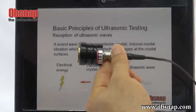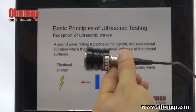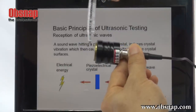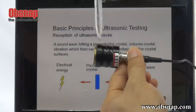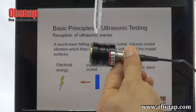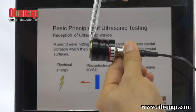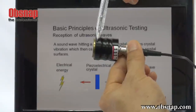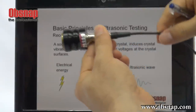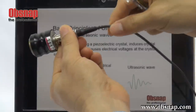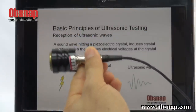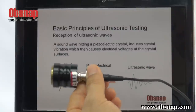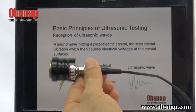Likewise, when there is a sound reflected in a material and it comes back to this probe, this crystal will also cause an electrical voltage at the crystal surface, so it can be detected by the sensor. This signal will then feed back to the main unit for display purposes.